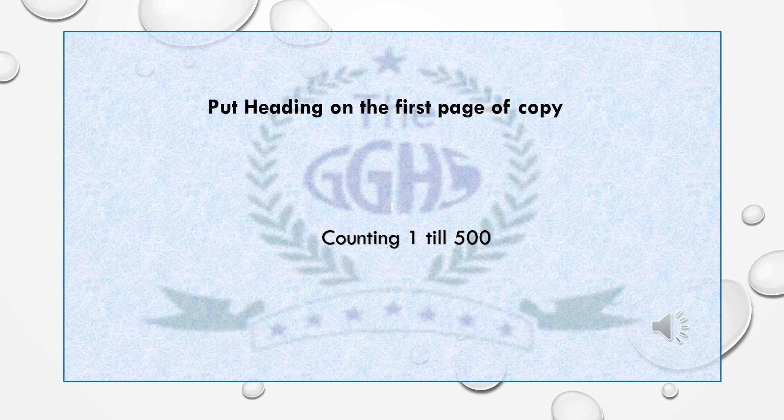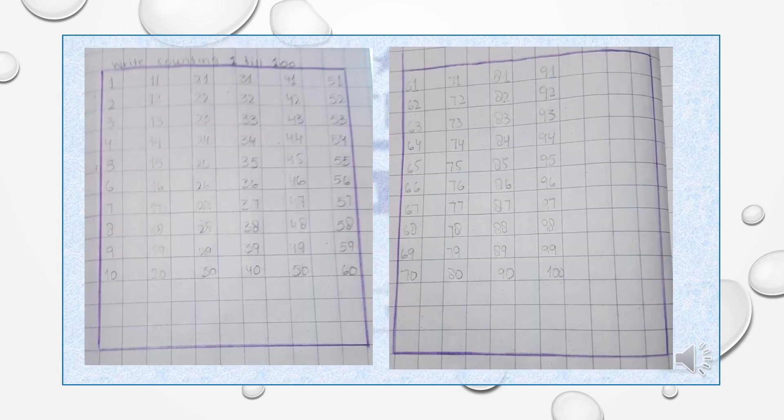Put heading on the first page of copy, counting 1 till 500. After completing the counting 1 till 100, you should follow the same format and complete counting 200 till 500.